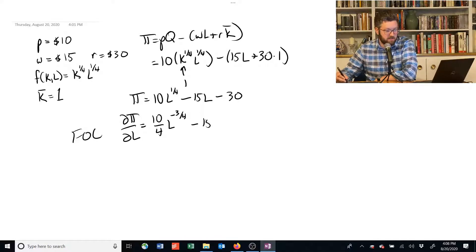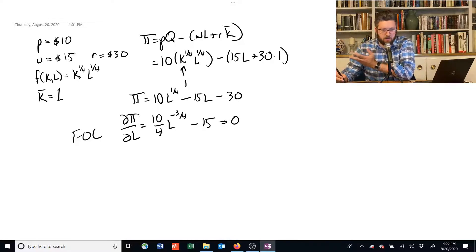Minus 15. And we're going to set this equal to 0 to get our first order condition where the profit maximizing point, where the profit's maximized.